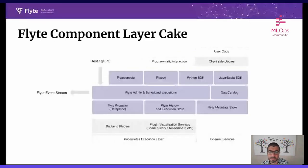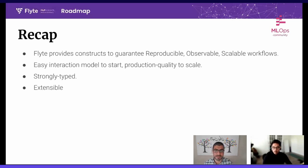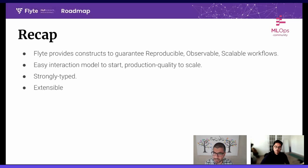To quickly recap: Flyte provides basic constructs to guarantee reproducibility and observability for workflows, allows you to scale up as data comes in, has an easy interaction model starting locally all the way to production at large scale, is strongly typed for more compile-time errors than runtime errors, and has extensibility points at every stage. We'd love to have you on Slack — join us at slack.flyte.org. And with that, it's off to you, Nils.